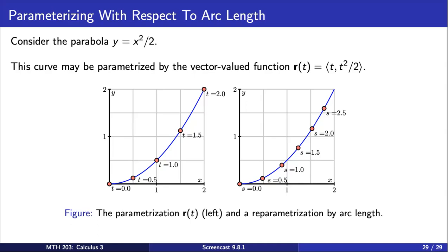On the other hand, an arc length parameterization is like using the mile markers on the side of the road to specify our position on the highway. If we know how far we've traveled along the highway, then we know exactly where we are.